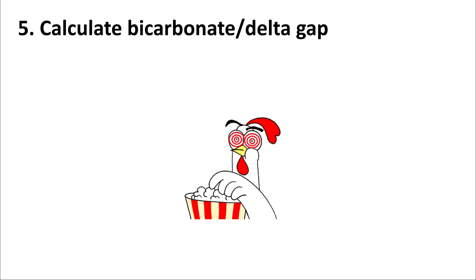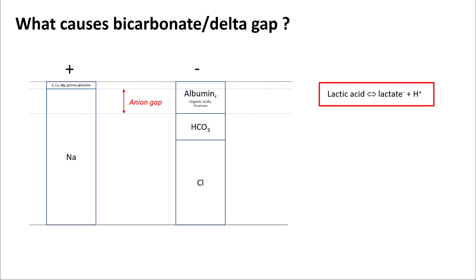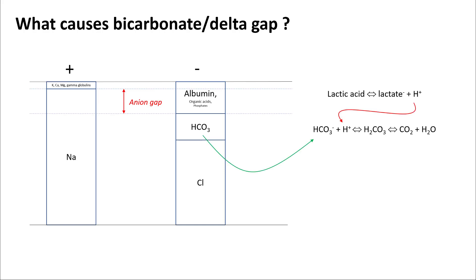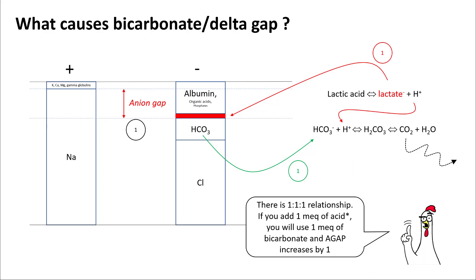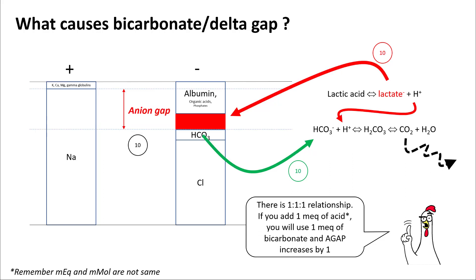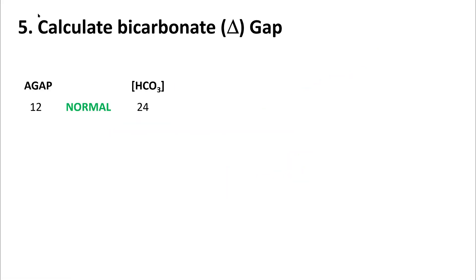Finally, calculate the bicarb or delta gap. If you add a lactic acid ion to the pool, it breaks into lactate and hydrogen. That hydrogen combines with bicarb to form CO2, which is breathed out, while the lactate remains in serum and increases your anion gap. So for every 1 unit increase in anion gap, bicarb falls by 1. If anion gap rises to 13, bicarb falls to 23. If anion gap rises to 14, bicarb falls to 22, and so forth.